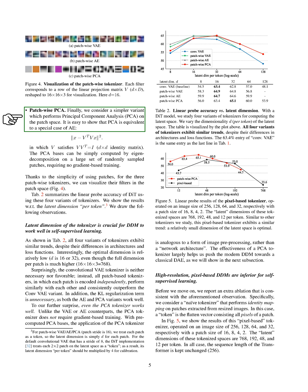Finally, we consider a simpler variant which performs principal component analysis, PCA, on the patch space. PCA is equivalent to a special case of an autoencoder, in which the bases can be simply computed by eigen decomposition on a large set of randomly sampled patches, requiring no gradient-based training. We can visualize their filters in the patch space. We show the results of the linear probe accuracy of the model using these four variants of tokenizers. We draw the following observations.